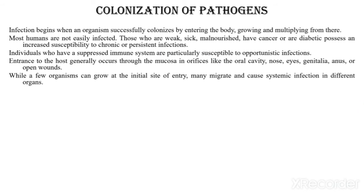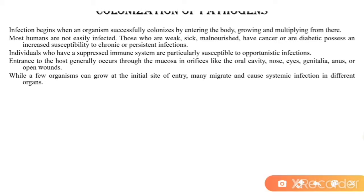While a few organisms can grow at the initial site of entry, many migrate and cause systemic infection. Sometimes microorganisms enter inside the body through portal entries such as skin or mucous membrane, and many times they do their growth at the site of portal entry. For example, if a pathogen enters through the skin, it will do its growth at the skin only.